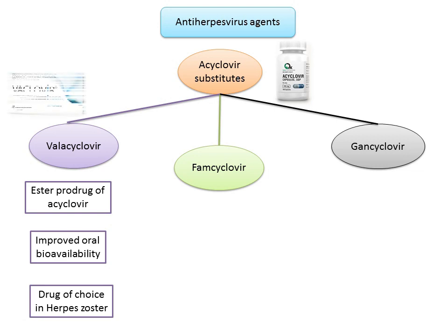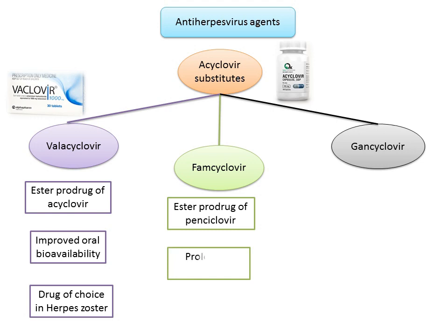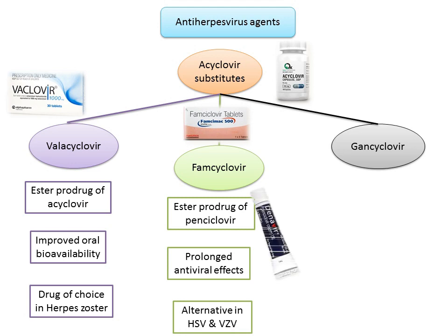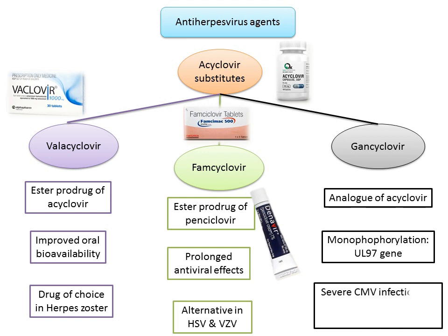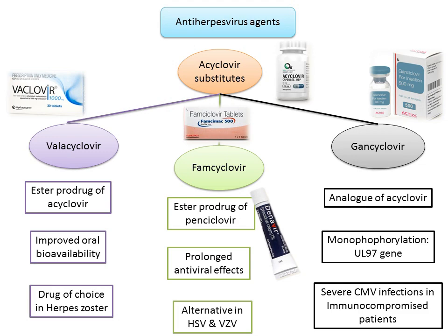Famciclovir is the ester prodrug of penciclovir with prolonged antiviral effects, used as an alternative in HSV and VZV infections. Famciclovir is available as an oral preparation, whereas penciclovir is available as a topical agent. Ganciclovir is an analog of acyclovir; its mechanism of action involves monophosphorylation requiring the UL97 gene. It is used for severe CMV infections in immunocompromised patients, available as oral, intravenous, and intravitreal preparations.